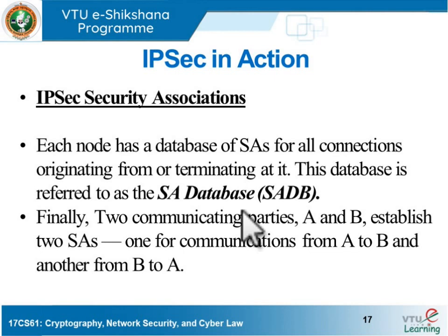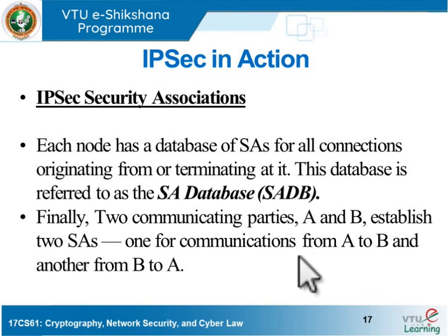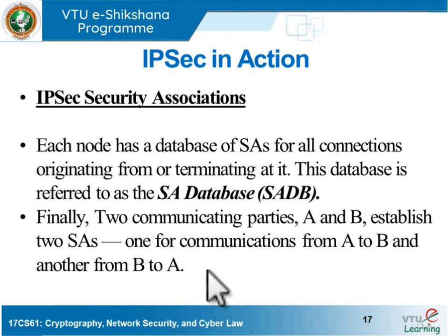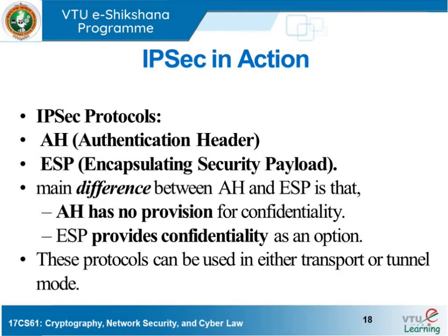An important point is that between any two communicating parties you need two security associations — one for each direction. If a security association is established from A to B, A can communicate with B, but B cannot revert back to A. For B to communicate with A, it must establish a separate security association from B to A.